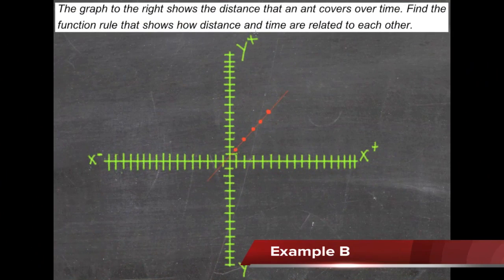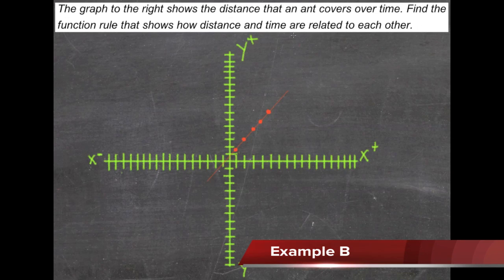Here we're taking information from a word problem and from an associated graph to write a function. The graph shows the distance that an ant covers over time. We need to find the function rule that shows how distance and time are related to each other.